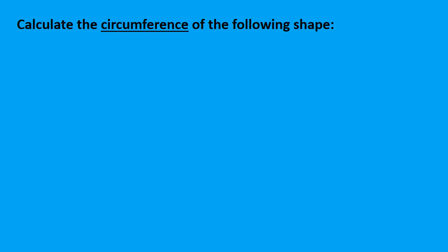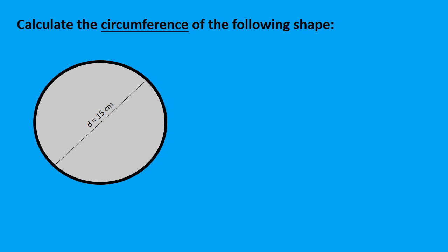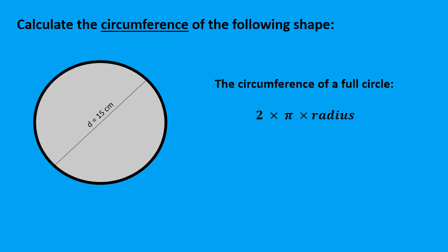Let's jump into it. Calculate the circumference of the following shape. They're asking you to calculate the perimeter — the circumference — of the following shape. They say this is a circle, and the diameter is 15 centimeters. The formula for a full circle is 2 times π times radius, also sometimes written as 2πr. When they stand next to each other, they're multiplying, so you multiply them together.